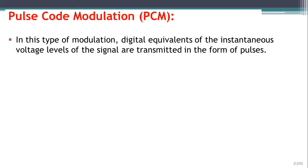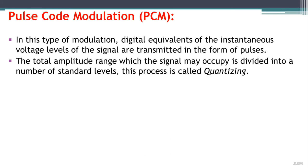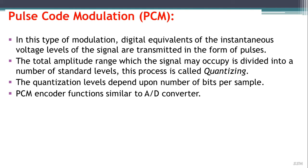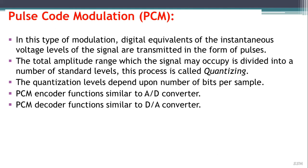Pulse code modulation, or PCM, transmits a digital equivalent of the instantaneous voltage levels of a signal in the form of pulses. The total amplitude range is divided into a number of standard levels — a process called quantizing. The level is set to the nearest standard level, and the quantization level depends on the number of bits per sample. The PCM encoder functions similarly to an analog-to-digital converter, and the PCM decoder functions similarly to a digital-to-analog converter.